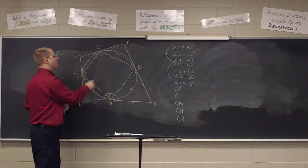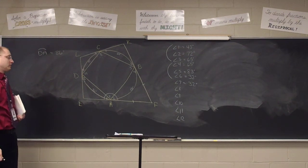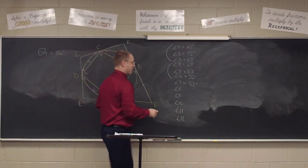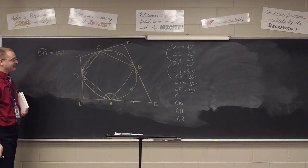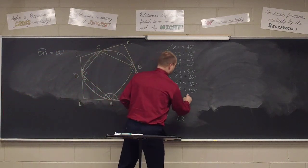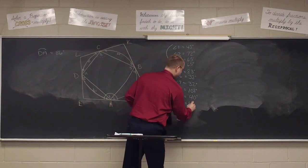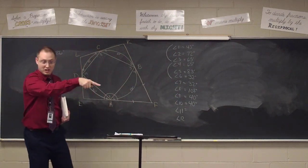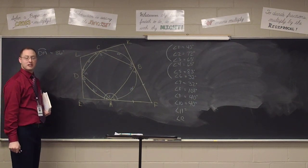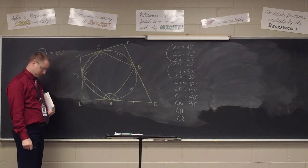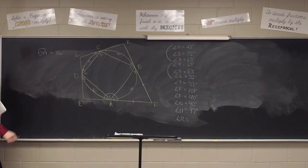So angle 7 is 32. Angle 8 — we've got a 216-degree arc, it's half the arc, so 108 degrees. Angle 9 — chord and tangent, half the arc — 40 degrees. Angle 10 — 40 degrees. Angle 11 — 97 degrees. Angle 12 — 43 degrees. Again, you could make sure they all add up to 180 going around in their little triplets.